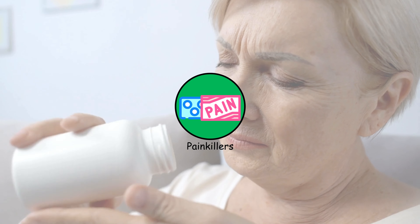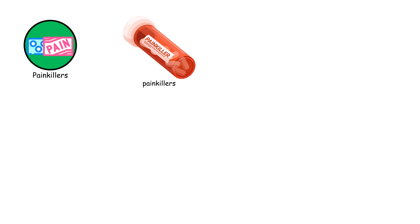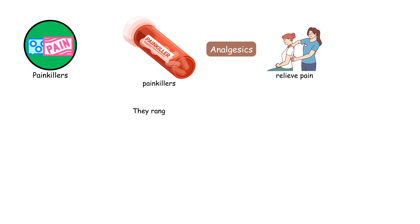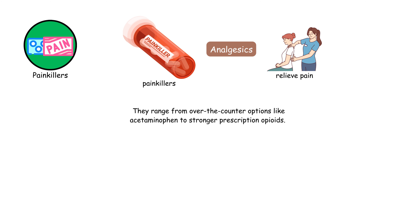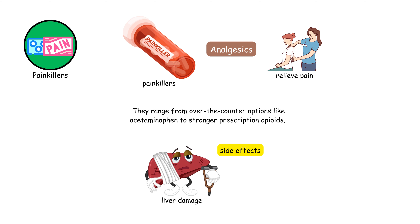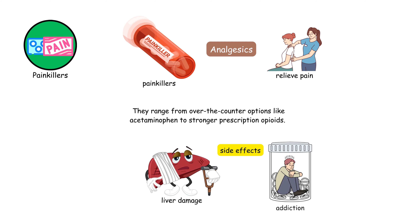Painkillers, or analgesics, relieve pain. They range from over-the-counter options like acetaminophen to stronger prescription opioids. Misuse can lead to side effects including liver damage or addiction.